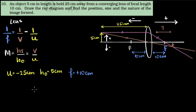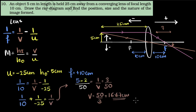Now we can plug in and find V. So: one over 10 equals one over V minus one over U, where U is minus 25. If we simplify — feel free to pause and check — we get V to be 16.67 centimeters. The positive sign means the image is on the right side of the lens, which is exactly what we got from the ray diagram. The image is 16.67 centimeters from the lens.